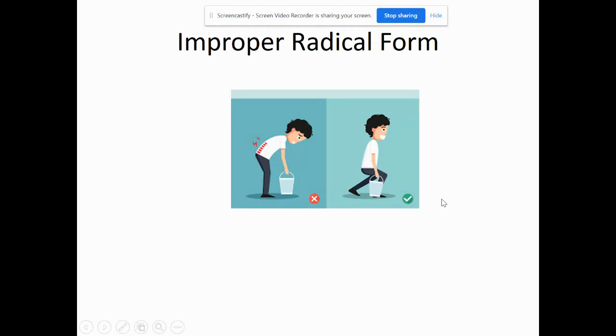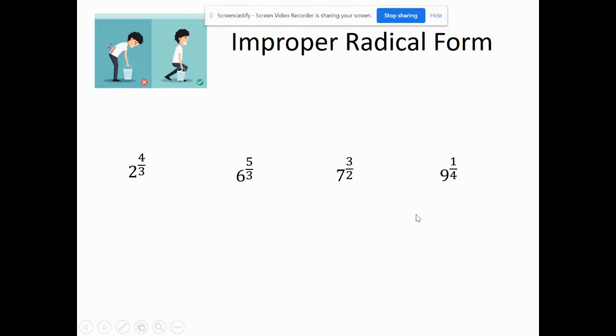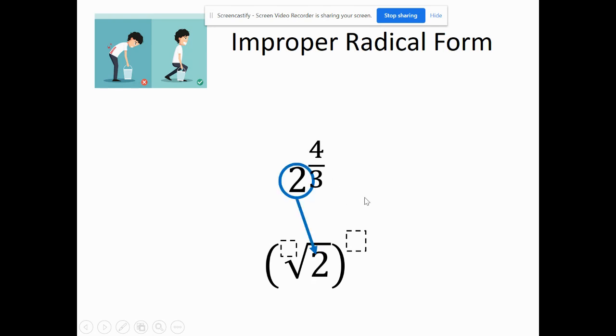Improper radical form basically means we have exponents that are improper fractions. What we're going to do is rewrite this. The two is our base and we're going to put it inside. The three is the root - the number of times we multiply by itself. Then once we have that number, we're going to take it to the fourth power. That's how I would rewrite that.